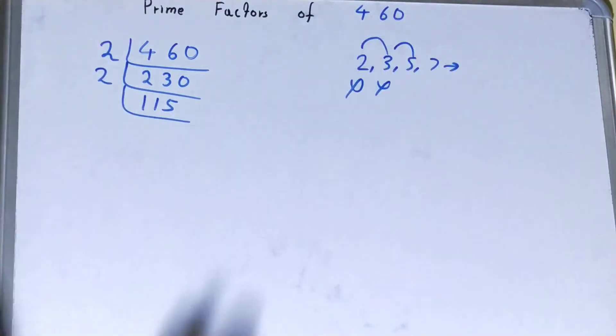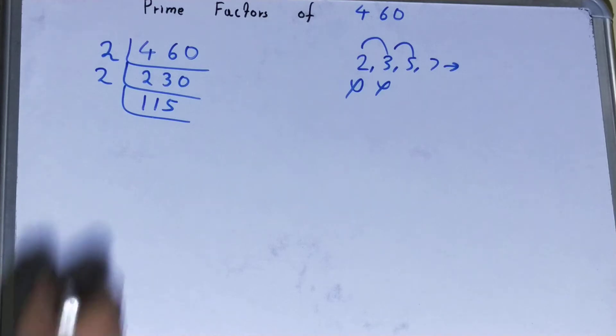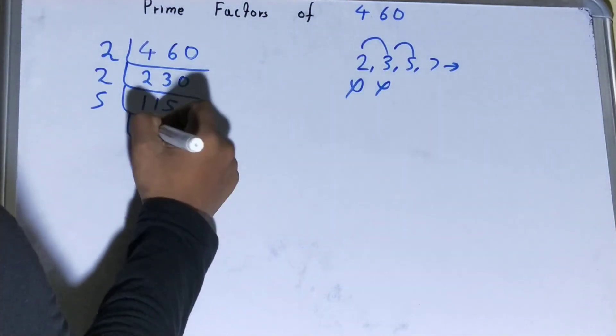So we'll go to the next lowest prime number that is 5. The last digit is 5. So yes, it is divisible by 5. So divide it 5, 23 times.